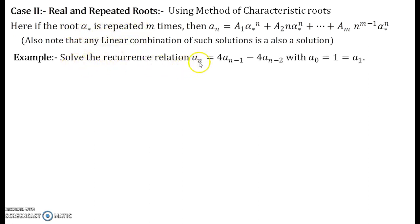Solve the recurrence relation a_n equal to 4a_{n-1} minus 4a_{n-2} where a₀ is equal to 1 and it is also equal to a₁. So these are the two initial conditions that we have: a₀ equal to 1 and a₁ equal to 1.